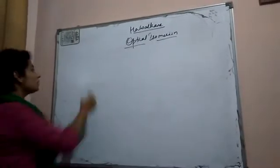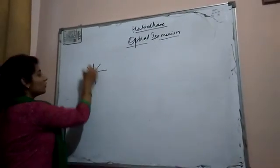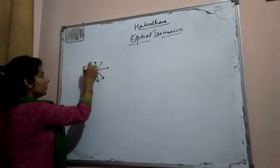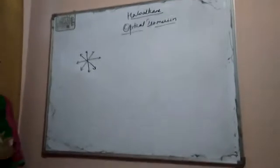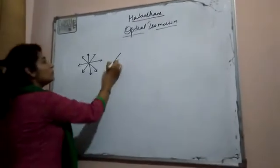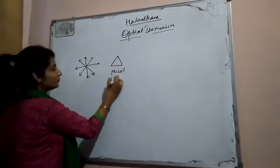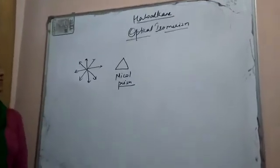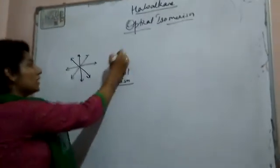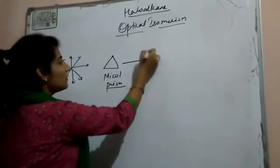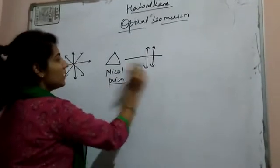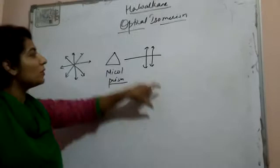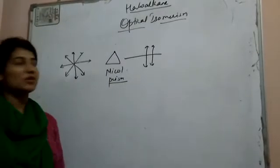We need to know that if we have taken any source of light, this light will vibrate and oscillate in each plane. But if we pass it through a Nicol Prism — Nicol Prism is called Calcium Carbonite — this light will pass only one plane; it will vibrate or oscillate in one plane.